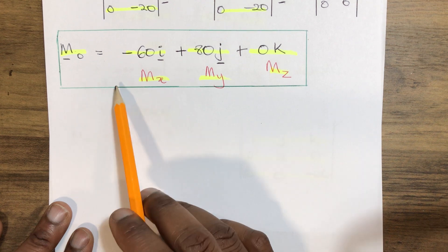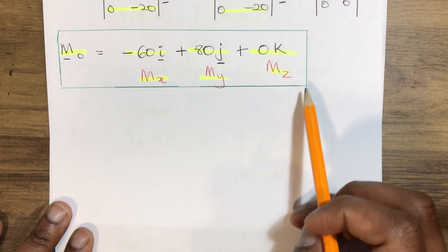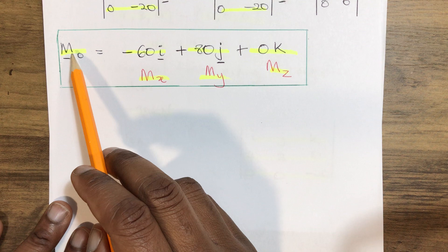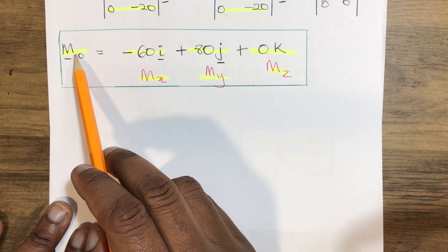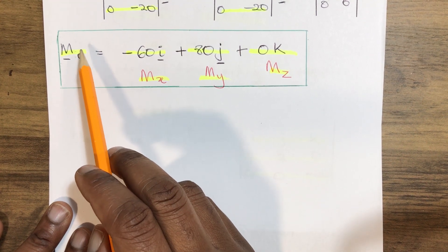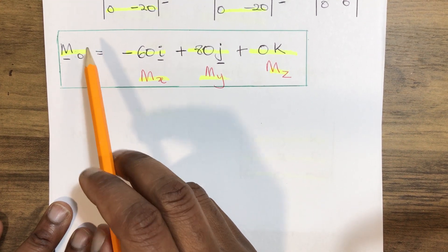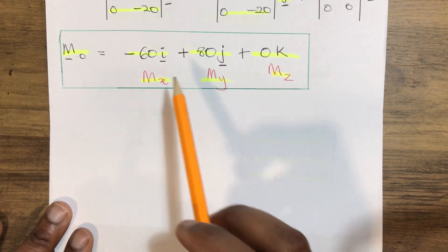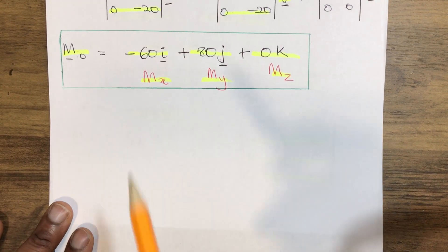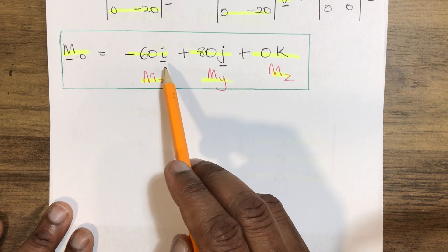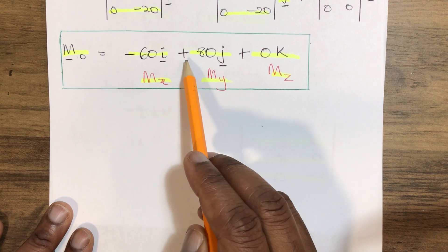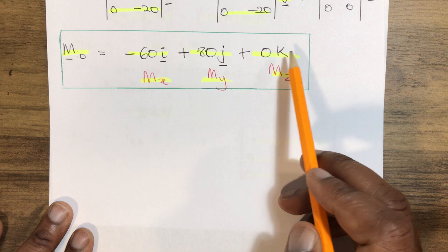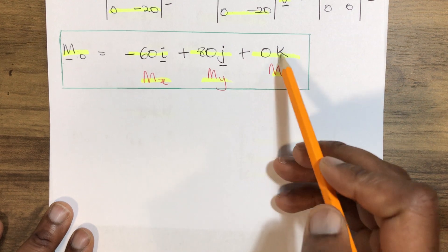So therefore we arrive at our final answer. The moment of force F, which is 20 kN acting downward about O the origin, gives us −60i plus 80j plus 0k.